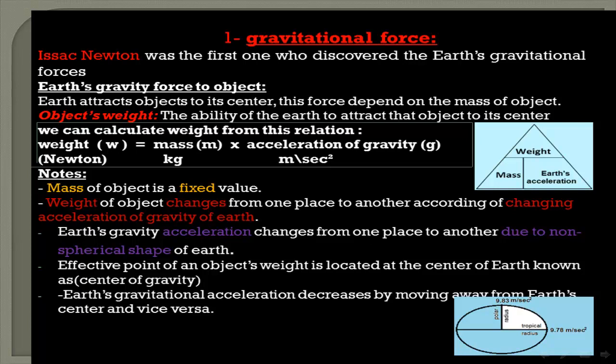The unit of weight is Newton, the unit of mass is kilogram, and the unit of acceleration of gravity is meters per second squared. Also, the mass of an object is a fixed value — it doesn't change anywhere around the Earth. But the weight changes from place to place, according to the change in the acceleration of gravity. Is the acceleration of gravity different from one place to another? Yes.